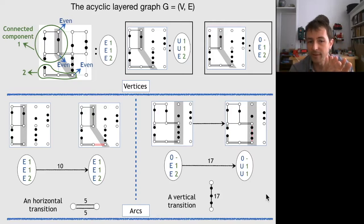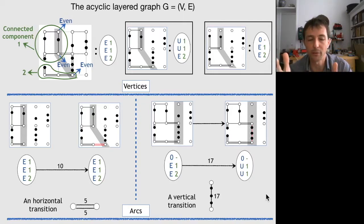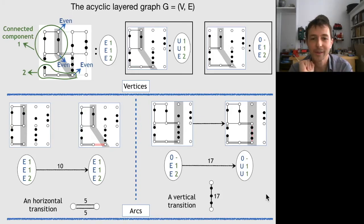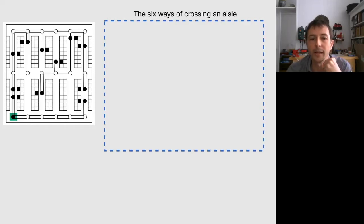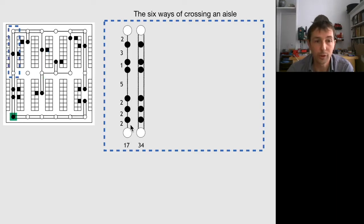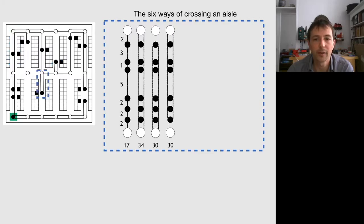The arcs represent a step forward from one subproblem to a slightly bigger one. Let's consider the possible ways to cross an aisle, looking first at vertical aisles. Here are the possible ways: I have put the distance between two consecutive products and the total distance of each trip. There are options going back and forth, and options where you stop in the middle — you can stop at various positions.